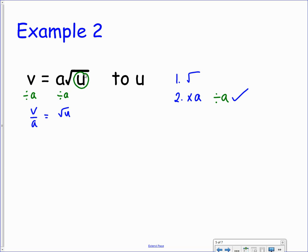We then need to deal with the square root. So to undo the square root, we need to square both sides. If we square the root u, we're going to be left with u. But on the other side, we're going to have this fraction squared. So it goes inside the bracket with the square outside.